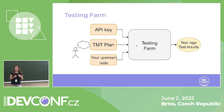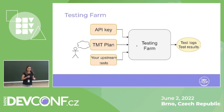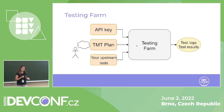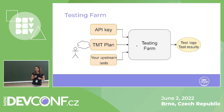What is the best feature of the Testing Farm? I would say it's the abstraction of the testing environment. You get the distribution you want — for example Fedora, CentOS, and RHEL. And you can also choose from various processor architectures.